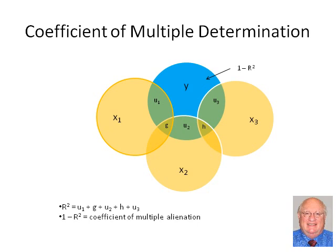In contrast, the proportion of total variance in y not predicted by the model is the coefficient of multiple alienation. Thus, from the standpoint of multiple regression, we partition total variance in the criterion into the portion we can predict, which is equal to big R-squared, and the proportion we cannot predict, which is equal to 1 minus big R-squared.